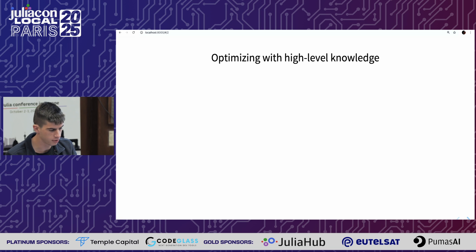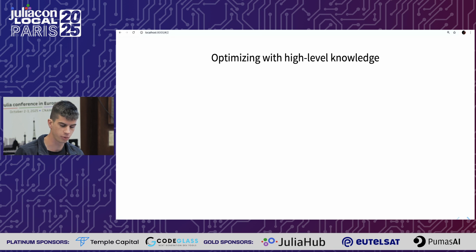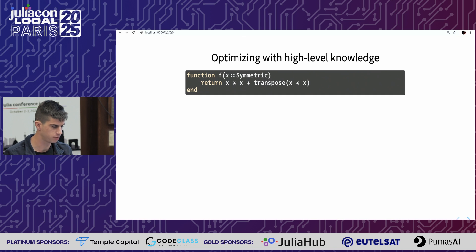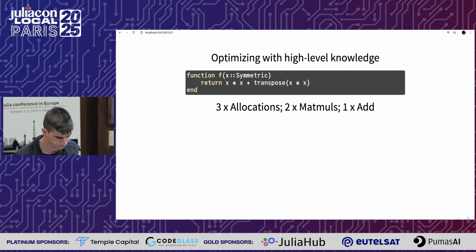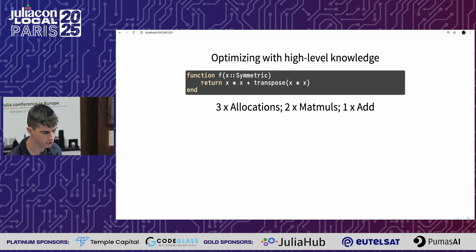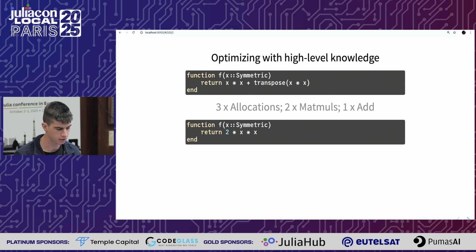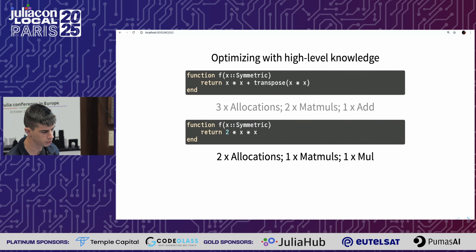Let's start with a simple example: the process of a Julia developer optimizing a function. If you write a simple function that does linear algebra operations, initially it performs three allocations — one for each matmul call and one for the result — performing two matrix multiplications and then one add operation, which is not ideal. A wise developer could use their knowledge of linear algebra to reduce this to two allocations, one for each intermediary matrix, and one matrix multiplication.